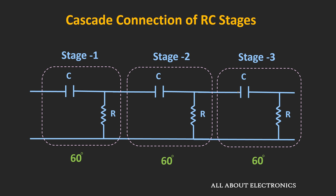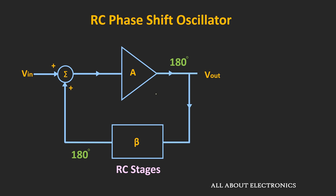In a practical RC phase shift oscillator, usually more than three stages are used to get a stable phase shift. For example, using four stages, each stage provides approximately 45 degrees, giving 180 degrees combined. The amplifier is used in the inverting configuration, providing 180 degrees of phase shift, and the RC stages in the feedback path provide the remaining 180 degrees, so the overall phase shift equals zero.